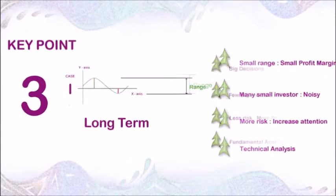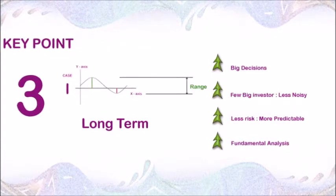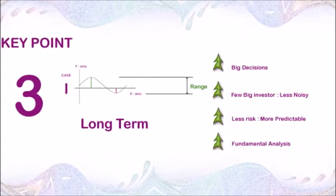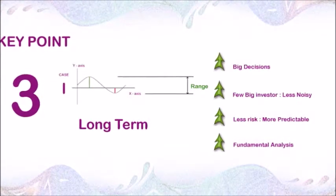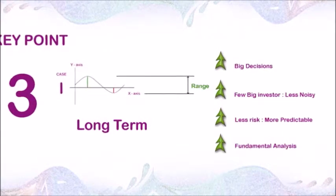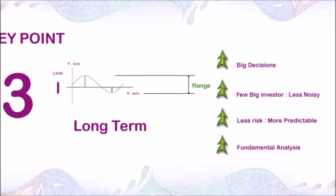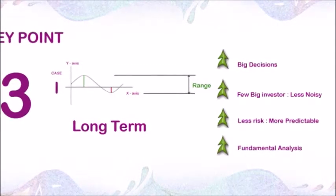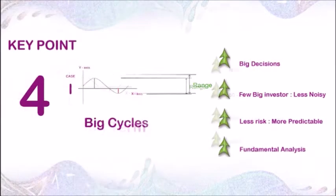Point number 3: Bigger business cycles are affected by big decisions, and it takes decades to form. Also, there are very few people who can make big decisions related to countries, economies and markets. So bigger cycles are less noisy and are more predictable. Thus, fundamental analysis works best here, and huge money can be made from it.